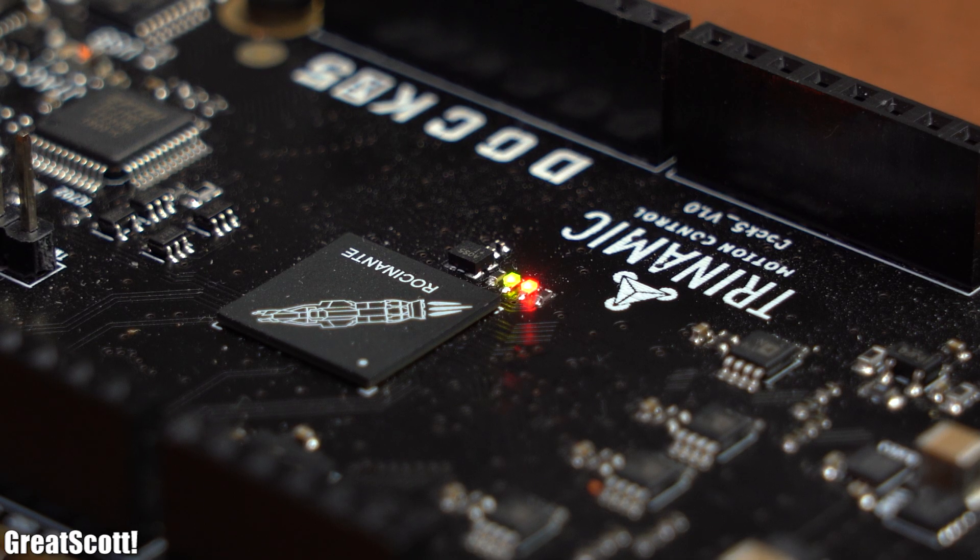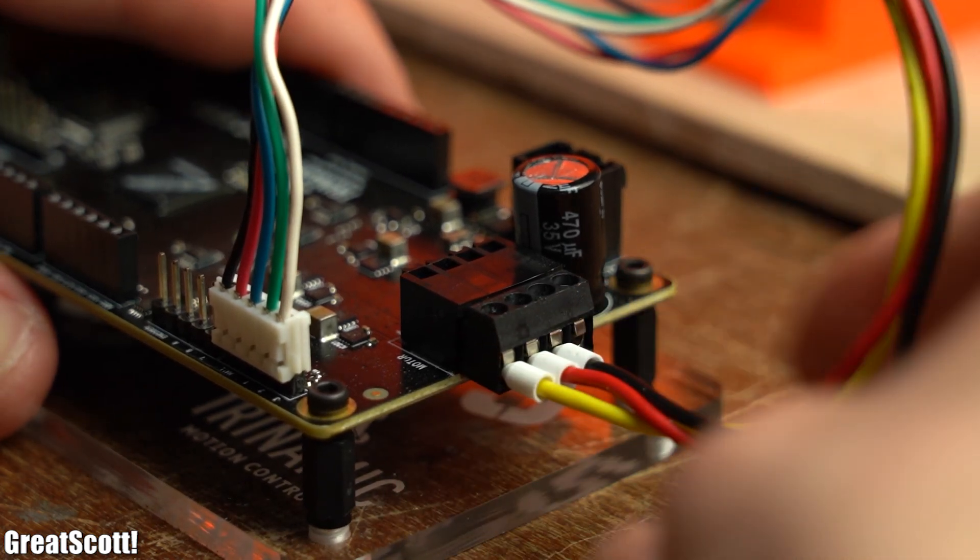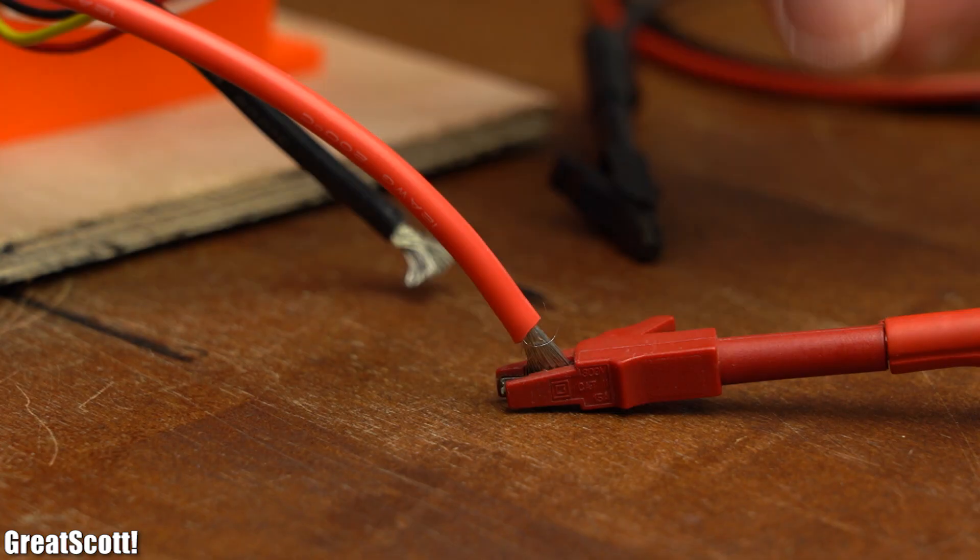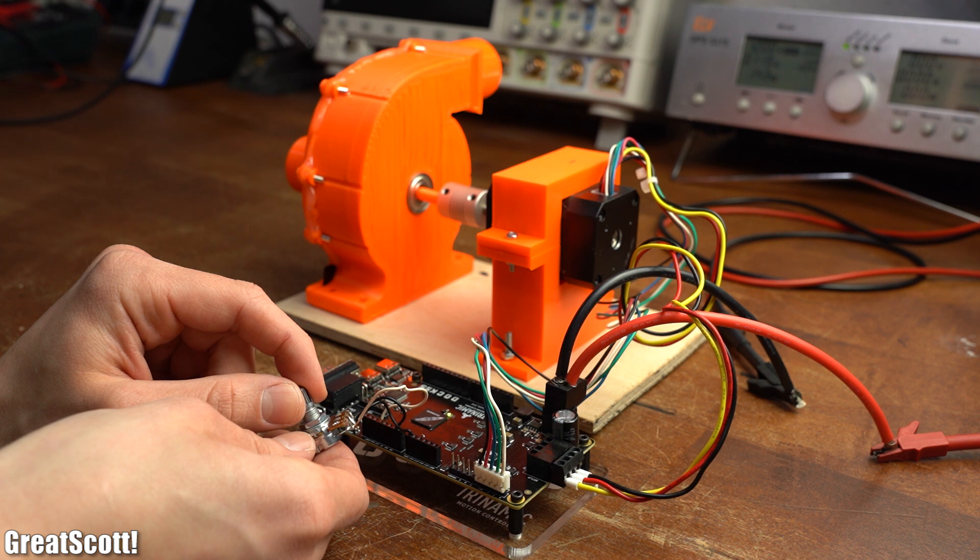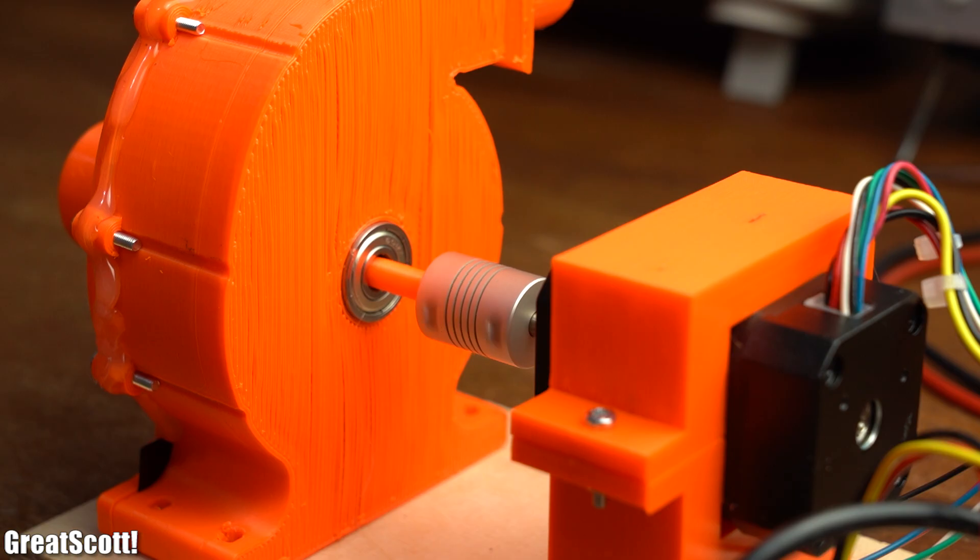So after programming the board, I hooked up all of the required wires and components and powered everything with a 12V power source. As you can see, the motor rotates without any problems, and it seems like our pump is ready for some water.